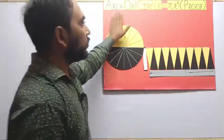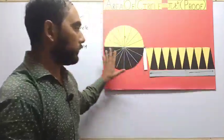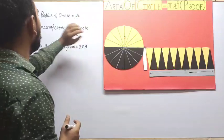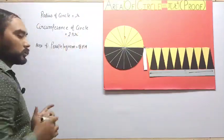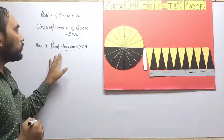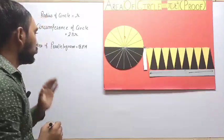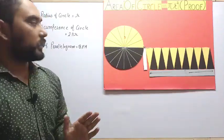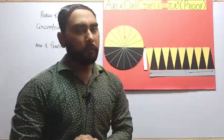Today we prove the area of a circle, which is equal to pi r squared, with a working model. First, we need to know that the radius of the circle is equal to r, the circumference of the circle is equal to 2 pi r, and the area of a parallelogram is equal to base times height. Now we see the relationship between the area of a circle and the area of a parallelogram.